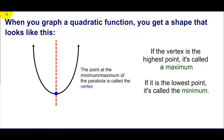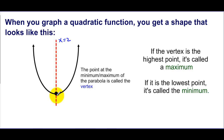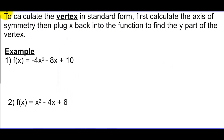We can also calculate the vertex. The vertex is that minimum or maximum point where the graph turns around, and that point is actually on the axis of symmetry. So if the axis of symmetry is x = 2, then the vertex is (2, something) — I just don't know the y-value yet. To find the vertex, we first calculate the axis of symmetry since they share the same x-value, then plug that x back into the function to find y.